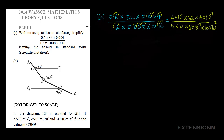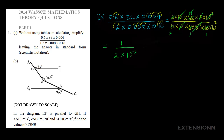To simplify, 6 and 12 cancel to give 2; 8 and 32 give 4; 4 and 4 cancel to give 1; 16 and 16 cancel to give 1. Then 10 to the power minus 1 cancels with 10 to the power minus 1, and 10 to the power minus 3 cancels with 10 to the power minus 3. On the numerator we have just 1, all over 2 times 10 to the power minus 2.